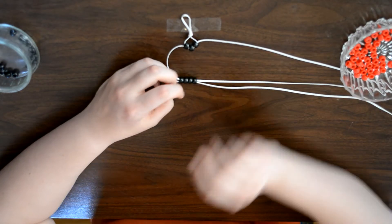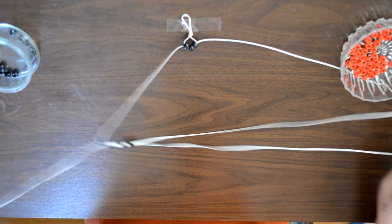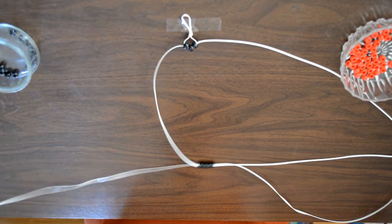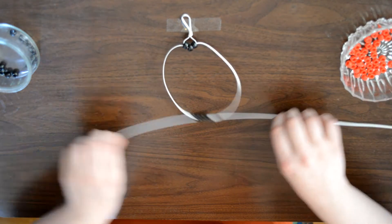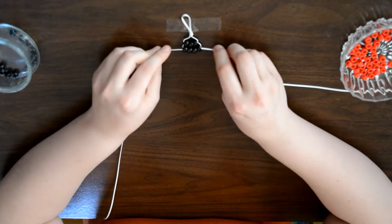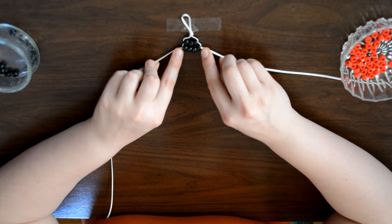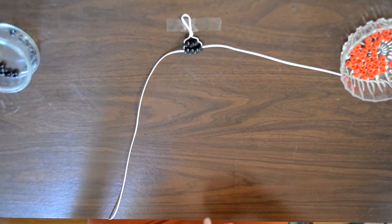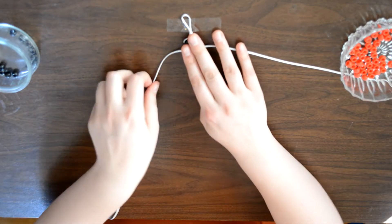And then we want to take the right side and put it through the opposite way towards the left. So from left to right and right to left each time. And then we pull on both loose ends and pull tight. So we now have the ladybug's head which is super fun.